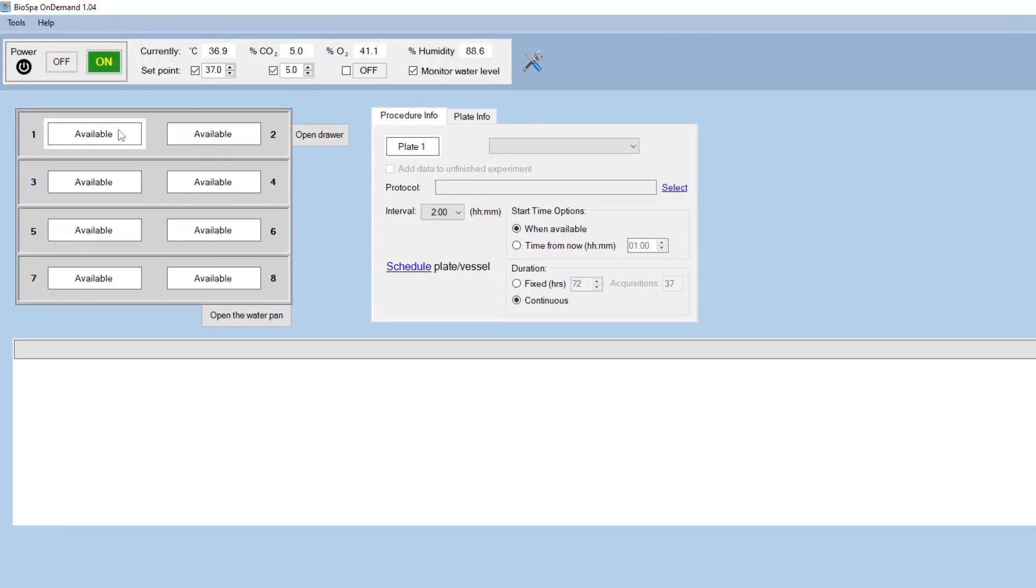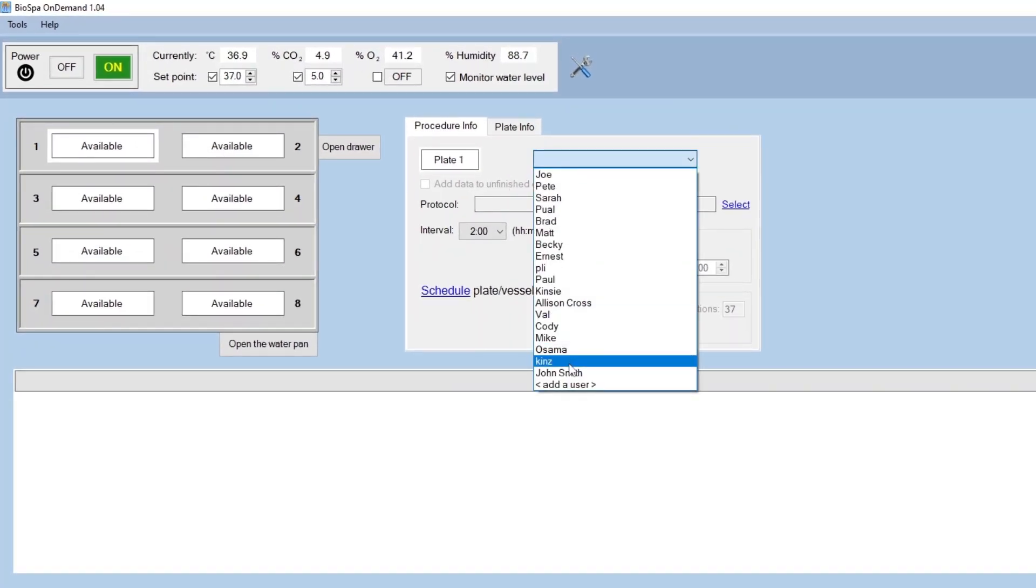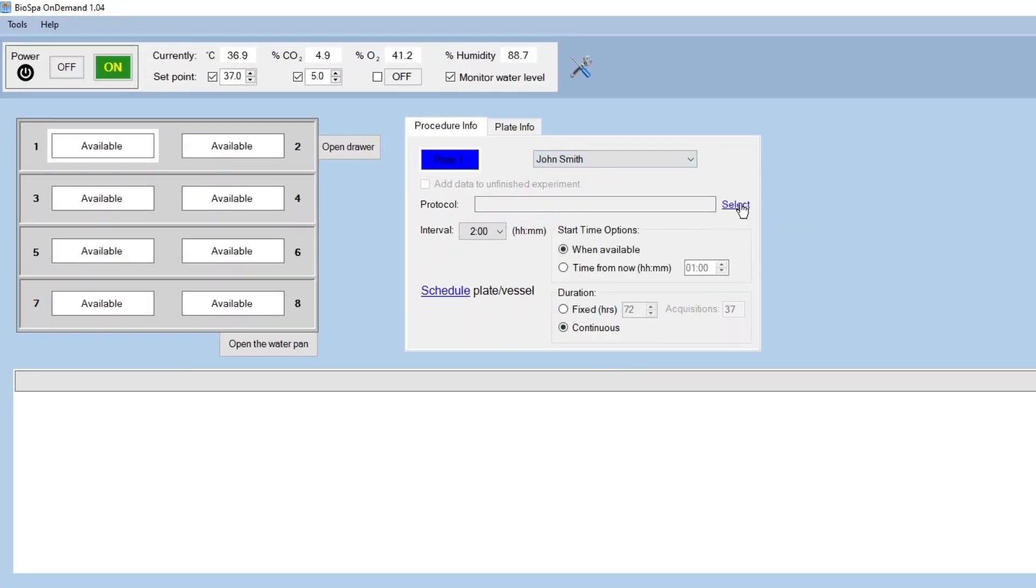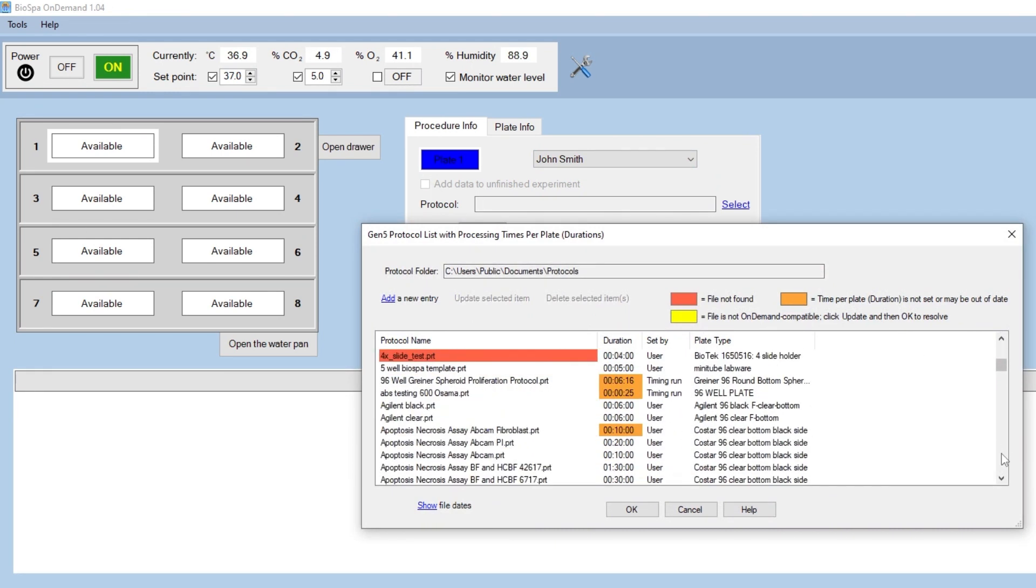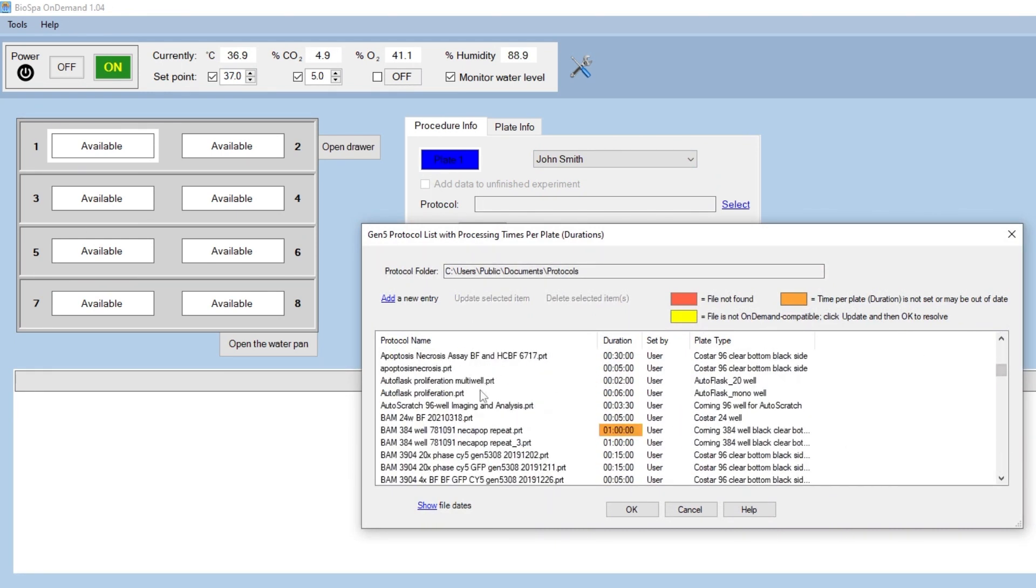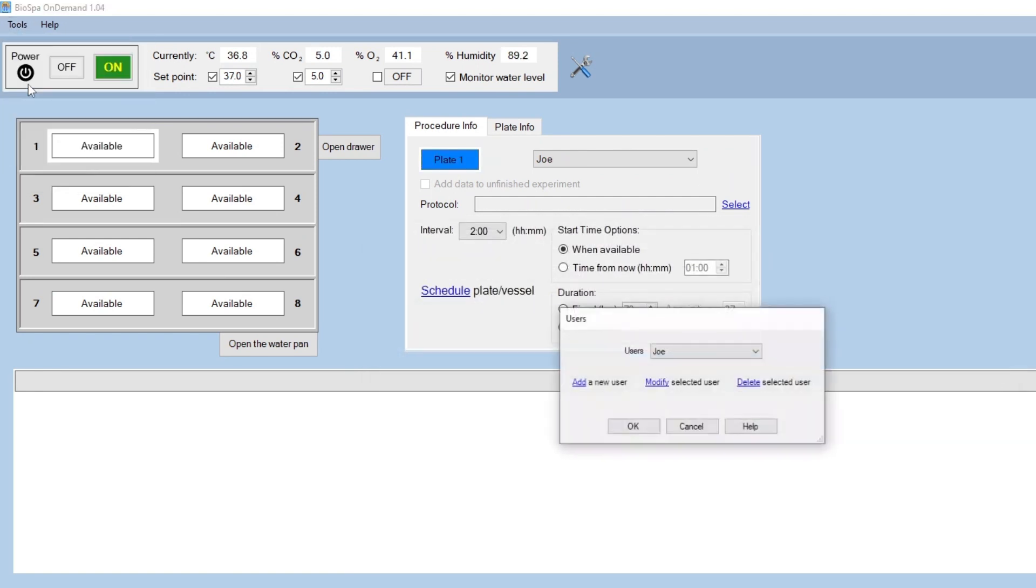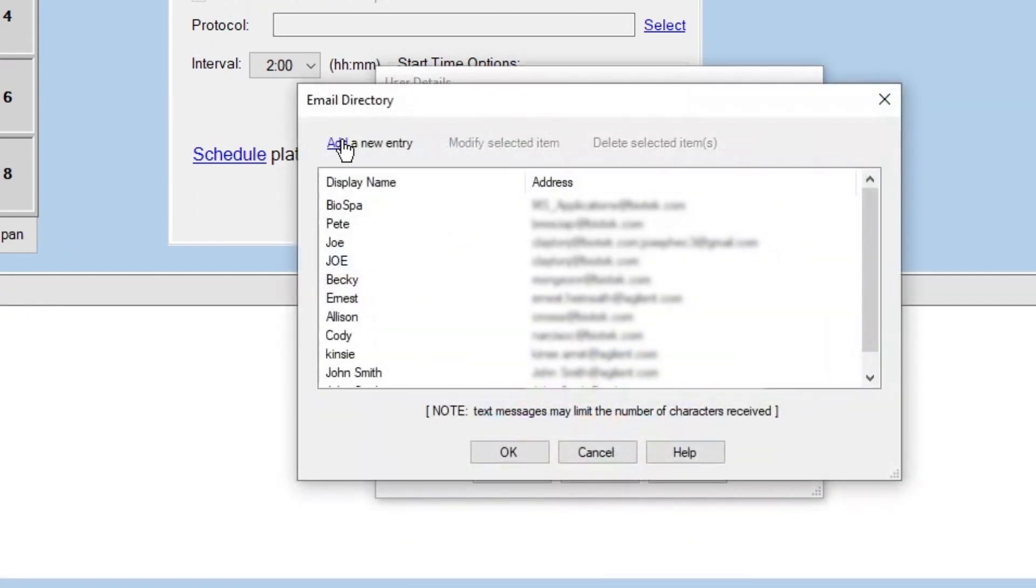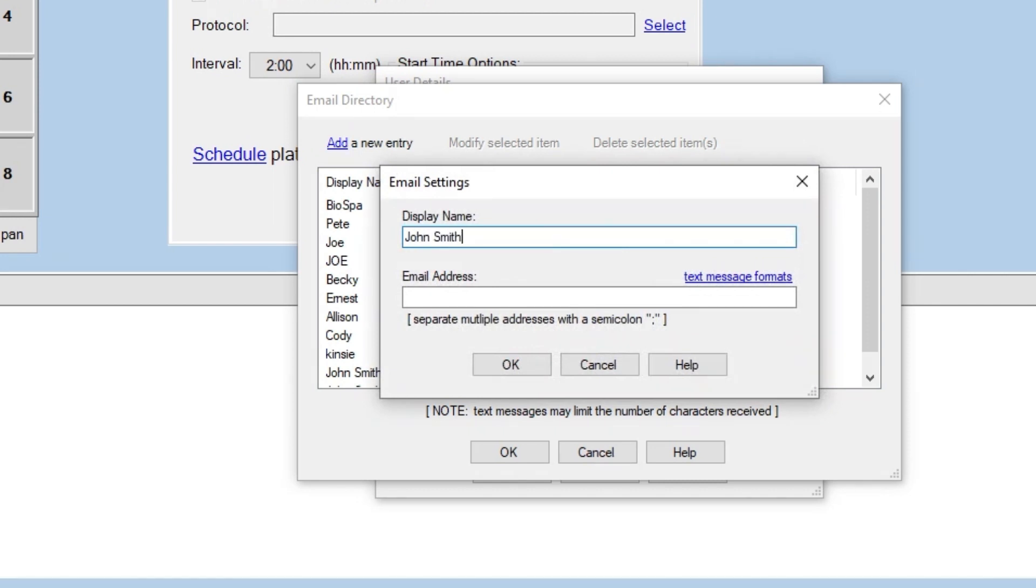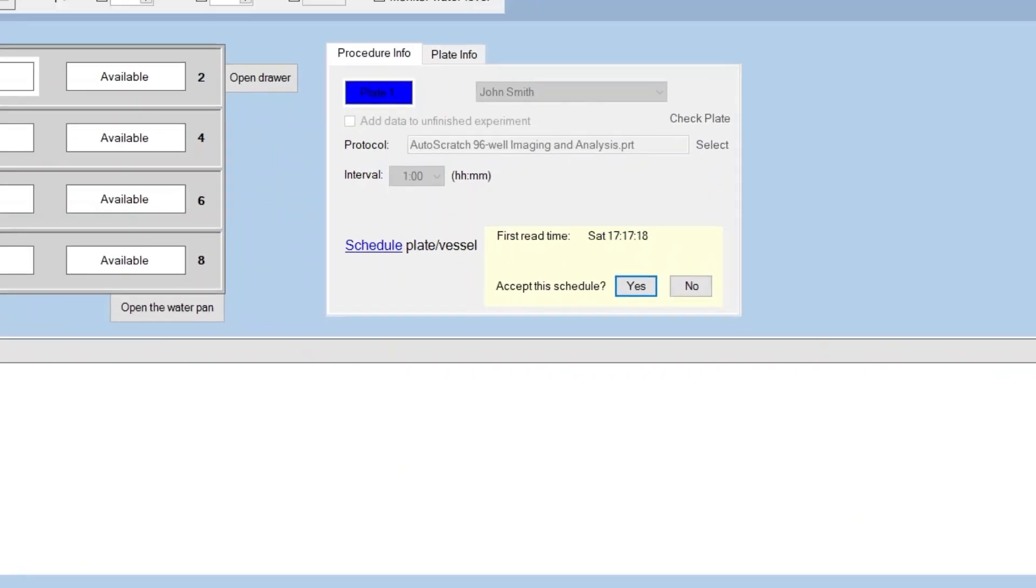In on-demand mode, multiple users can add new plates and start protocols as well as stop protocols and remove plates at independent times that meet theirs and their lab's own schedules. Each user can set up his or her own profile, which includes color coding to make identification of their protocols easy and efficient, as well as how they want to be notified when plates have been processed, either via email or text message.